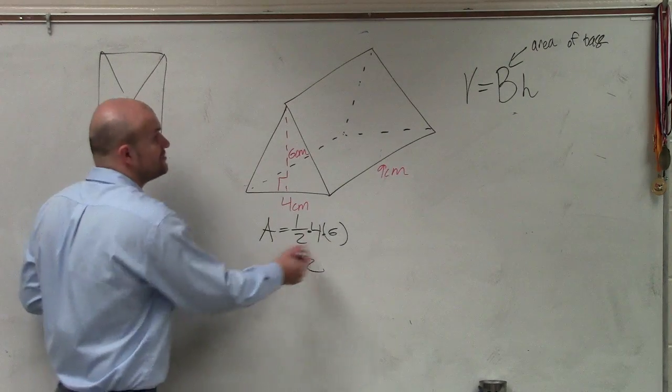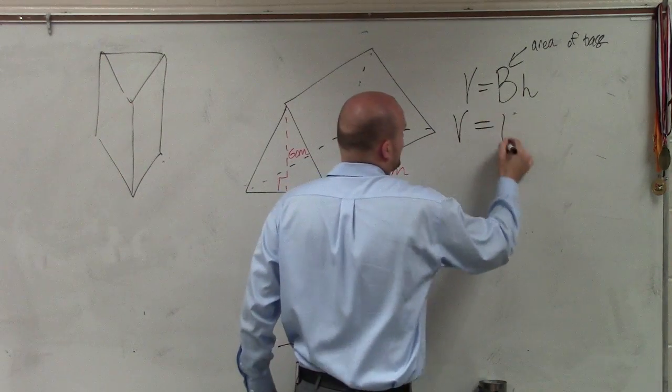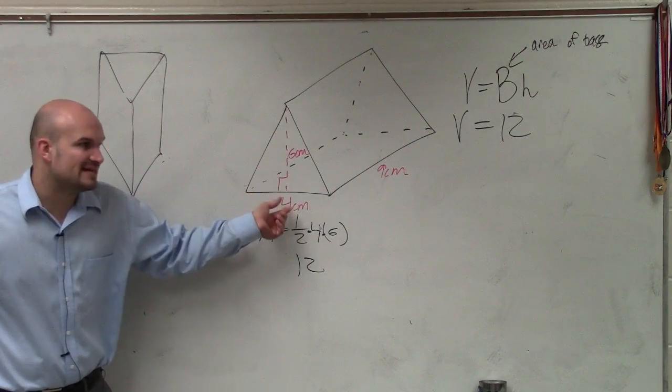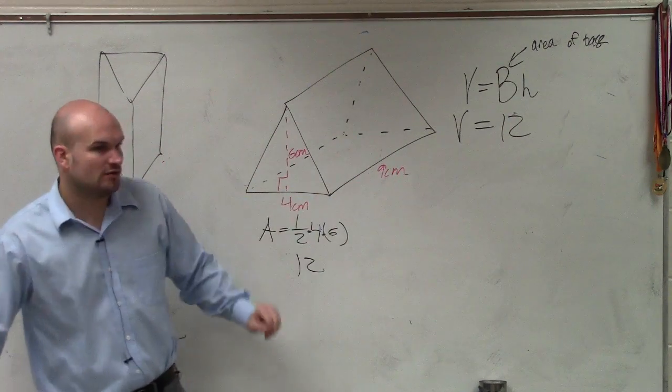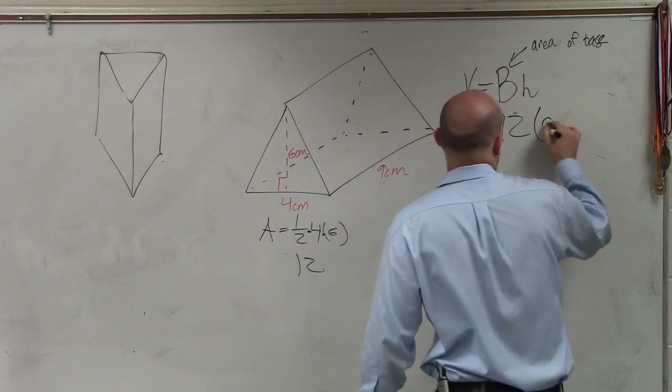So the area, so big B is 12, because that's the area of the base. Now I just need to multiply 12 times 9, which is my height.